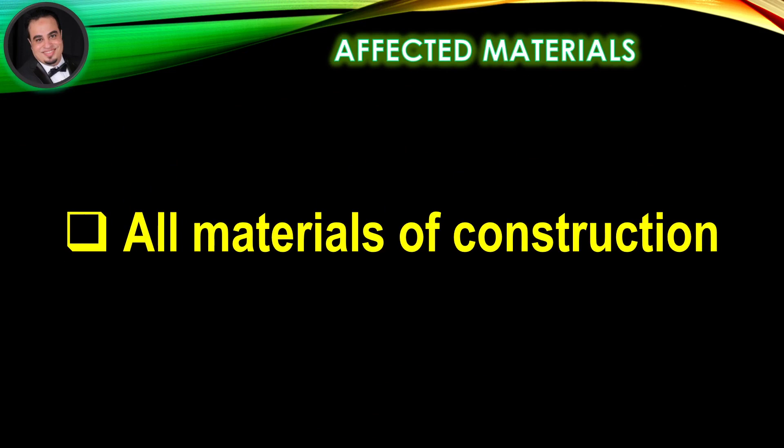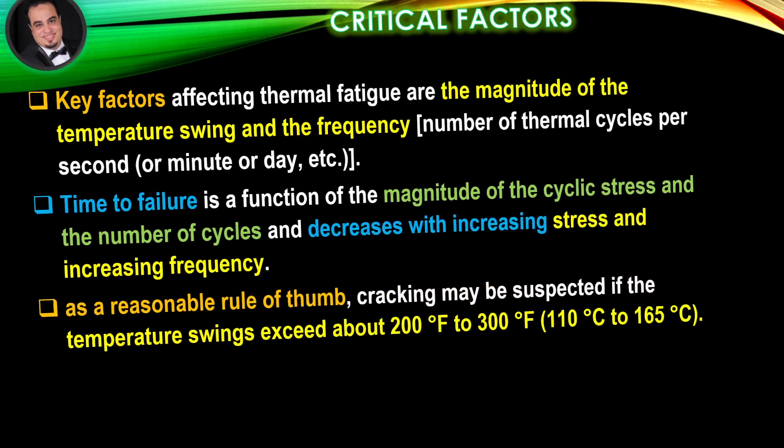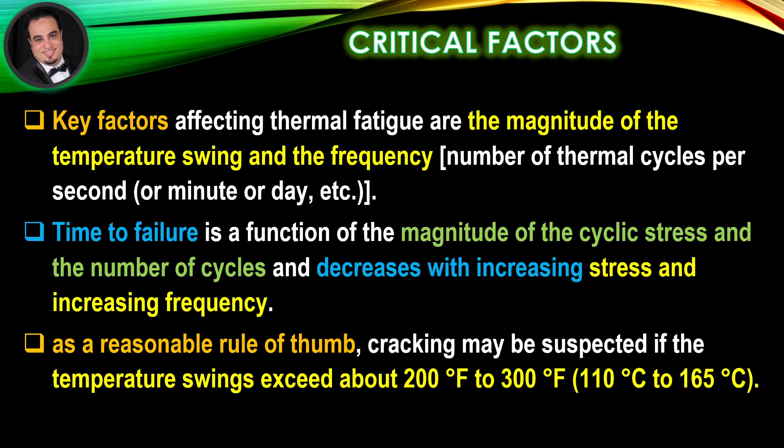Affected materials: all materials of construction. Key factors affecting thermal fatigue are the magnitude of the temperature swing and the frequency — number of thermal cycles per second, minute, or day. Time to failure is a function of the magnitude of the cyclic stress and the number of cycles, and decreases with increasing stress and increasing frequency. As a reasonable rule of thumb, cracking may be suspected if the temperature swings exceed about 200°F to 300°F.